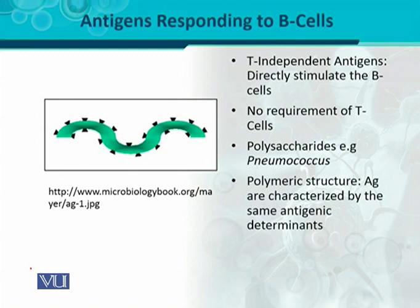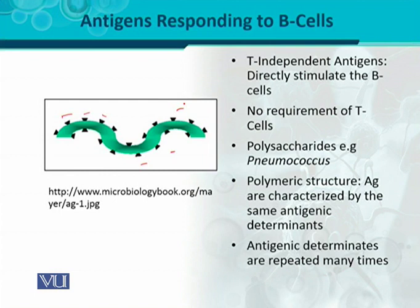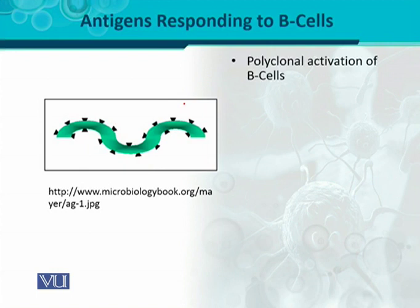The polymeric structure means that the antigen's antigenic determinants are all the same — all the antigenic determinants are identical. This means one antigen can engage more and more receptors present on the surface of B cells. Antigenic determinants are repeated many times, present in polymeric structure in different forms. This leads to polyclonal activation of B cells — T-independent antigens activate B cells in a polyclonal manner, meaning many clones of B cells can be activated.